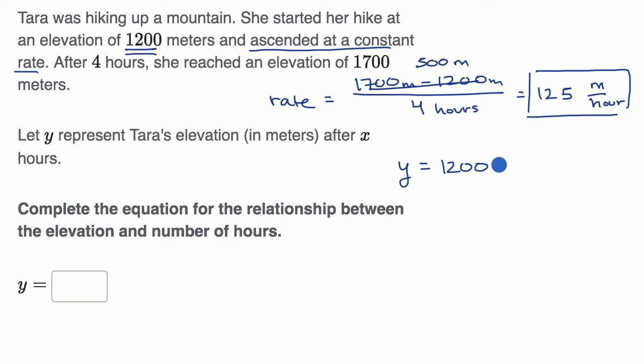And then to that, we're going to add how much she climbs based on how many hours she's traveled. So it's going to be this rate, 125 meters per hour, times the number of hours she has been hiking. So the number of hours is x times x.